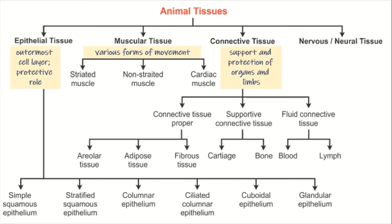For the connective tissue, they are basically for support and protection of organs and limbs. Connective tissues are divided into three: the connective tissue proper, the supportive connective tissue, and the fluid connective tissue. Lastly, we have the nervous or neural tissue, which is responsible for carrying electrical and chemical signals and impulses.